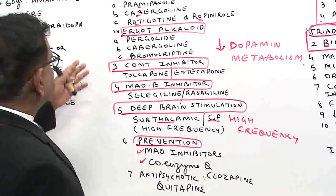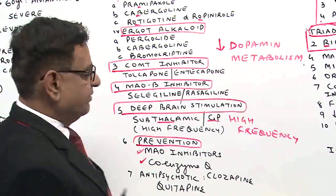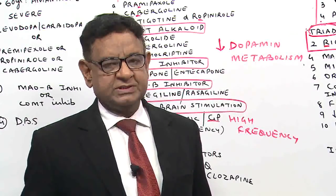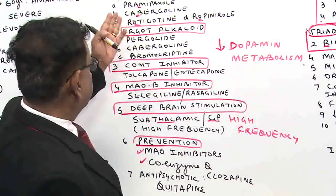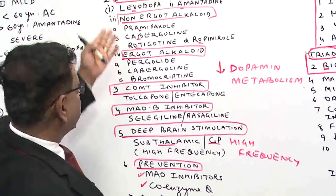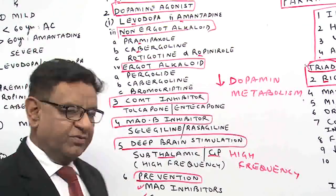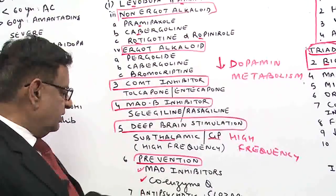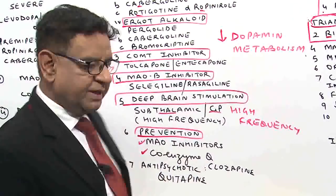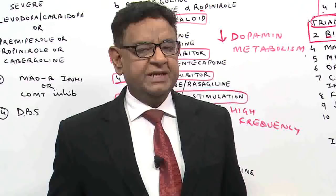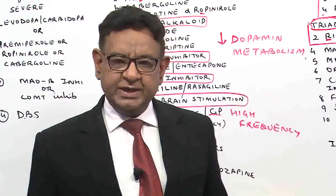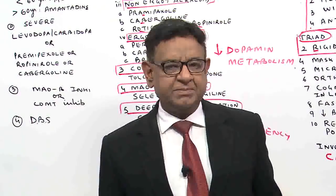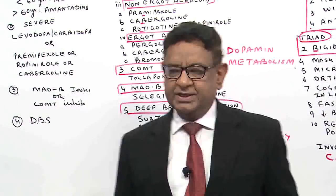When using drugs like levodopa, they can lead to psychosis. Psychosis is a big side effect of dopamine agonists. To treat psychosis, you can use clozapine or quetiapine, which are antipsychotic drugs.